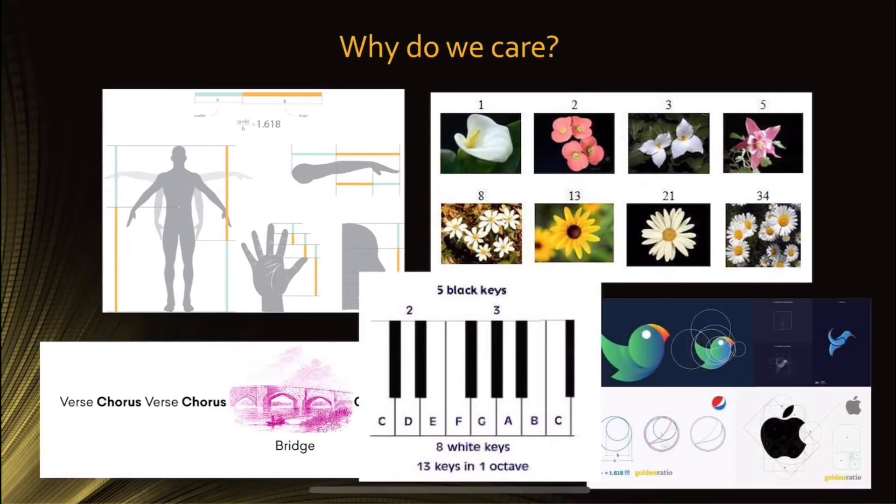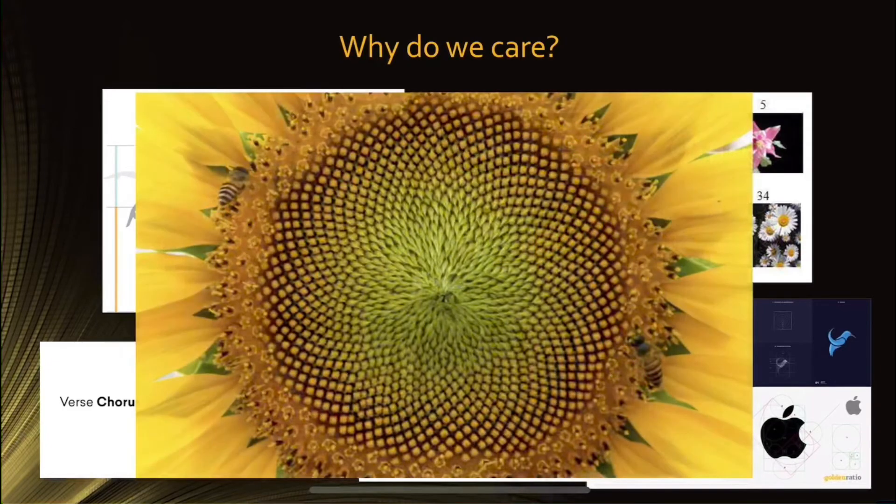And another place we see the golden ratio is in art, architecture, graphic design is used very often to make logos more visually appealing. And I could go on all day about all the different places we see the golden ratio and the Fibonacci sequence. But the example that I really want to focus on is the placement of seeds in sunflowers.